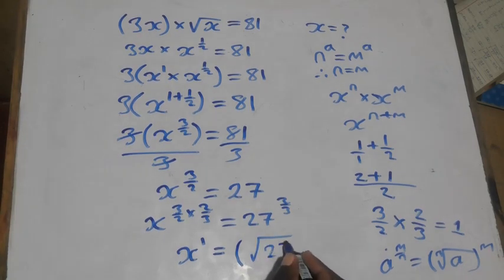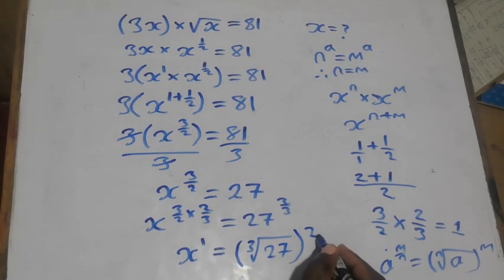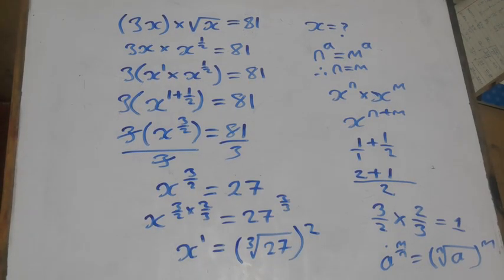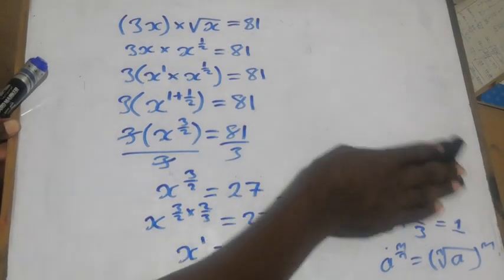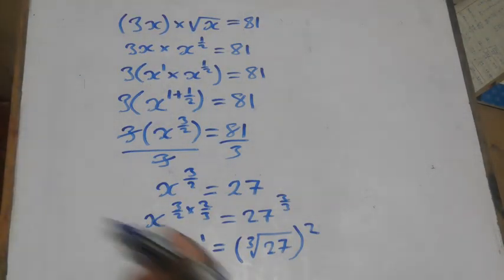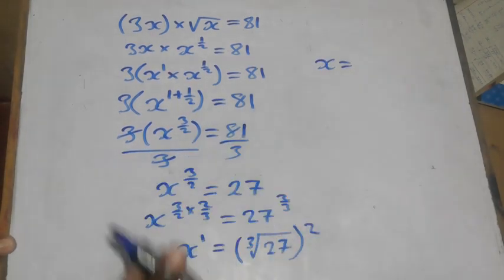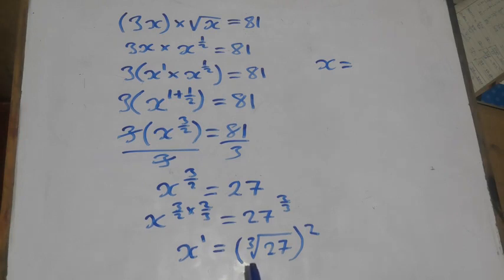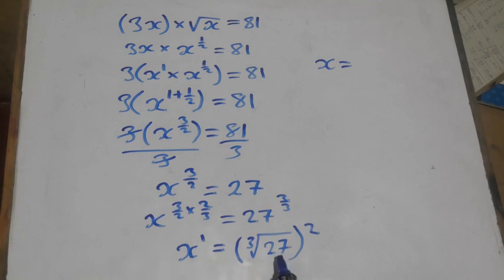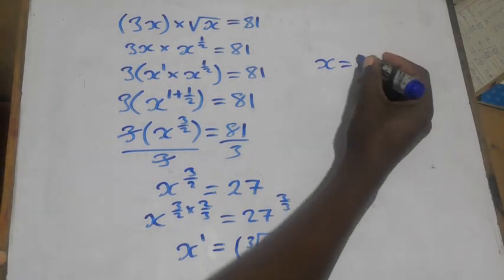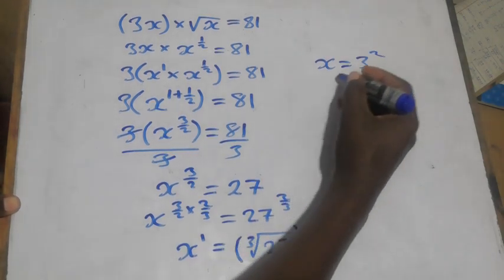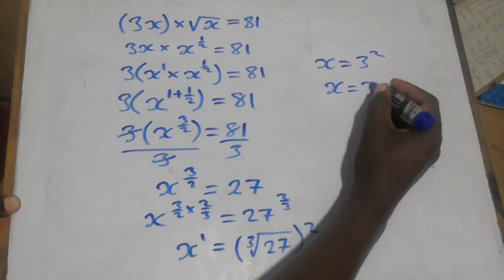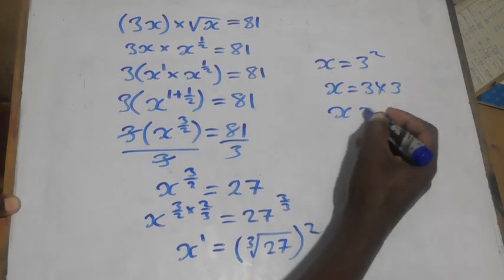Applying that law, we take the cube root of 27, then raise it to the power 2. The cube root of 27 is the number multiplied 3 times to give 27, which is 3. So x equals 3 to the power 2, which is 3 times 3, equal to 9.